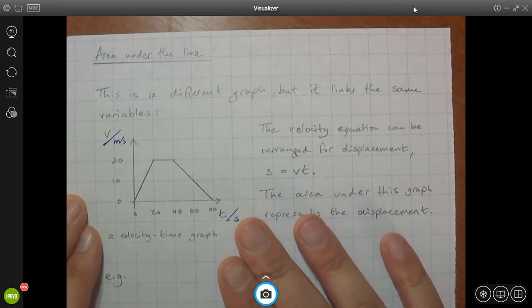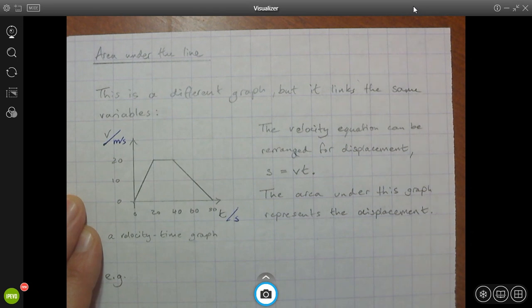So let's consider the area under the line. The area under the line is another feature of a graph. Now, to give you a little bit of context, I've given you a graph with some meaning, which we are looking at in the second part of this lesson. So this is a different kind of graph. This is a velocity time graph.